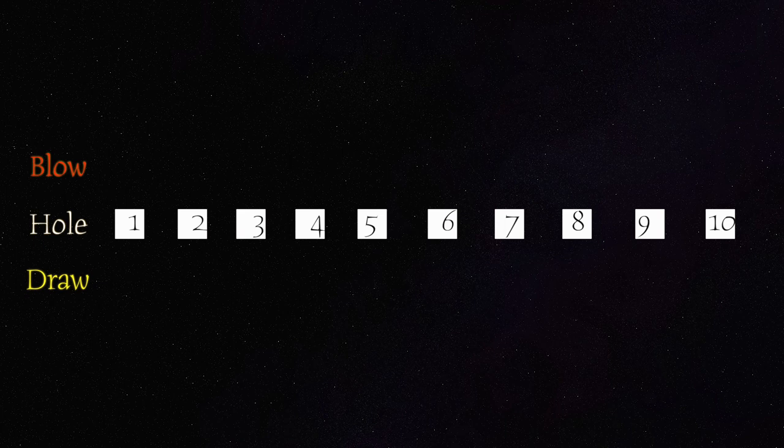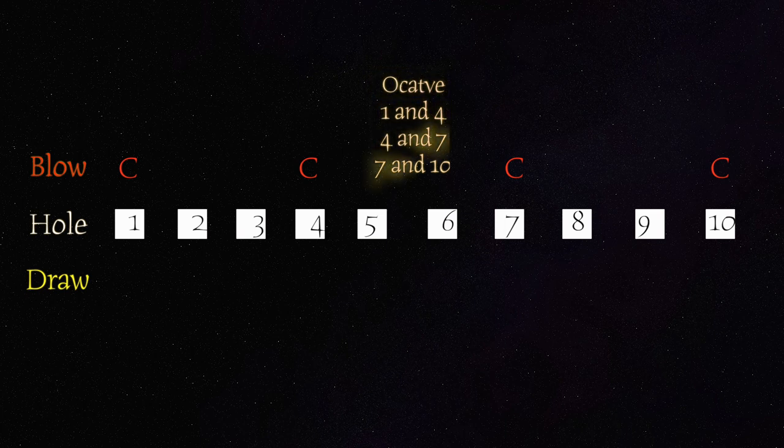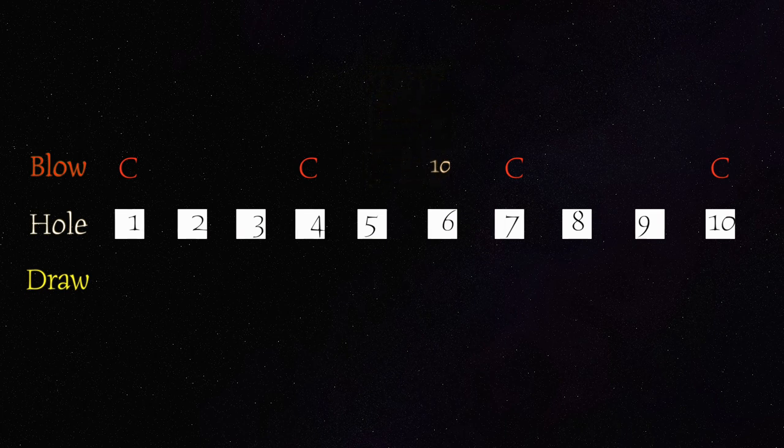In our previous session, the tongue block, I mentioned octaves. So you have your 1-4 octave, which has the same letter name. One note is double the frequency. One plays the C note. And therefore since 4 is an octave, it's also a C. 4 and 7 is also an octave. So it means 7 is also a C. 7 and 10 is the same octave. So 10 is also a C. The next octave.